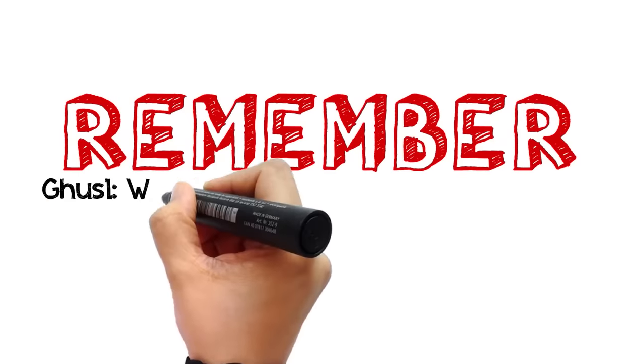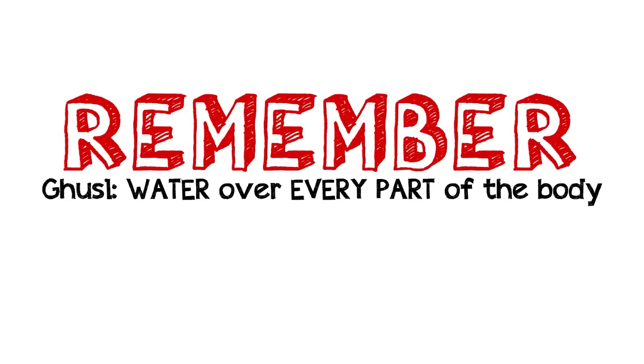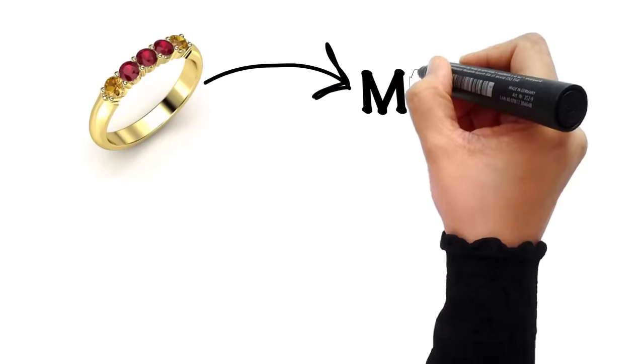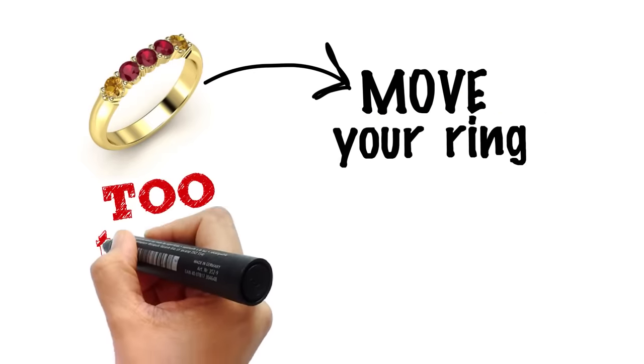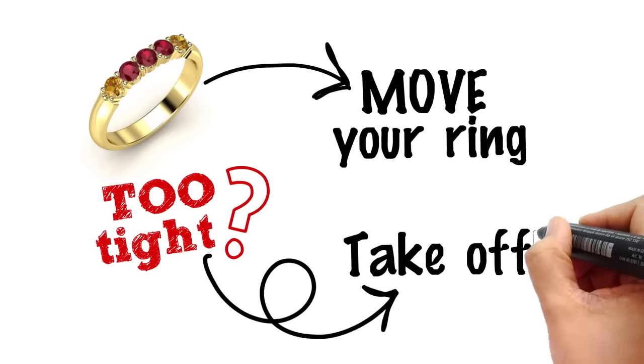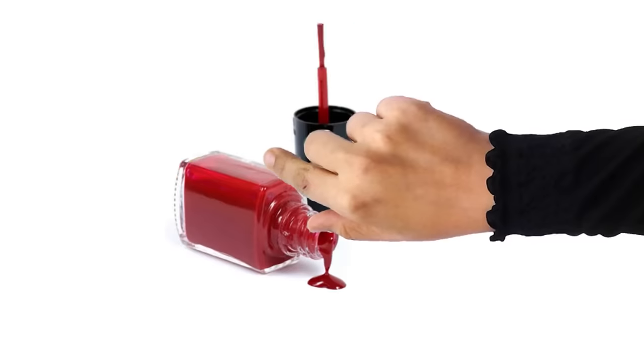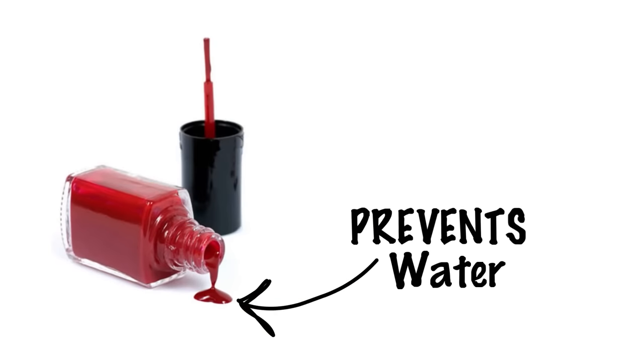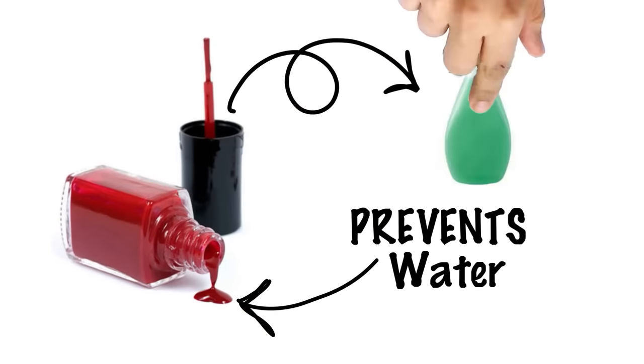Gosil essentially means letting water run over every part of your body. So if you are wearing a ring, you should move it. And if it is so tight that the water won't reach the skin underneath, then you have to remove it. Cosmetic items which form a barrier and prevent the water from reaching your skin must also be taken off.